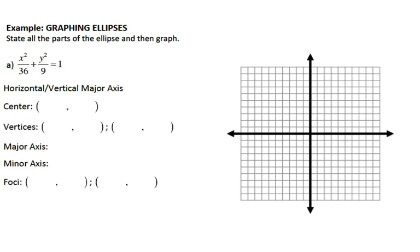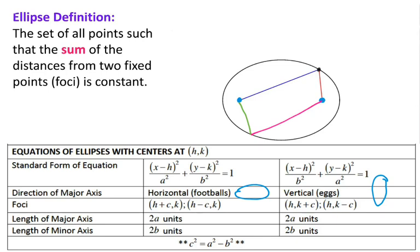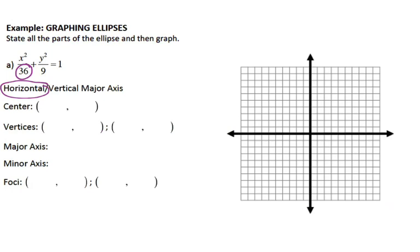First example: graphing the ellipse. In order to determine what kind of major axis you're going to have, you need to look at what's in the denominator. Your major axis is the longer portion of your ellipse. Look at where your bigger number is. If the bigger number is underneath the X, you're going to have a horizontal major axis. If the bigger number is underneath the Y, you would have a vertical major axis. From here, I'm going to find my center using the standard form formulas. Within those parentheses, we still have H and K just like with parabolas, but for ellipses it's called the center. With this particular problem, I don't have parentheses in my numerator, so my center is at (0, 0) — the origin.